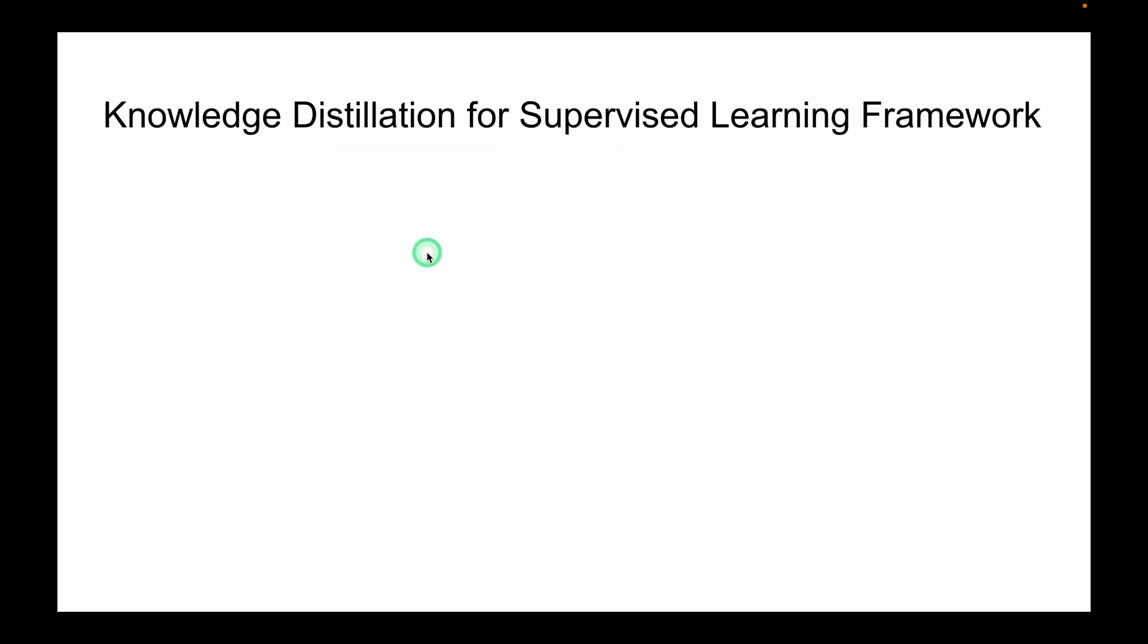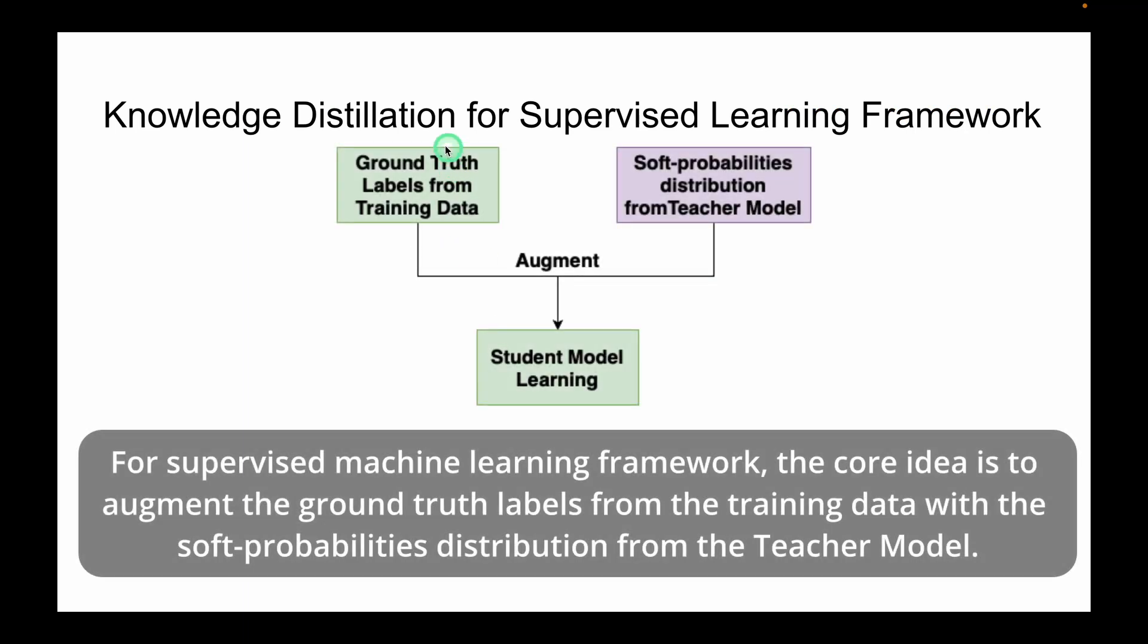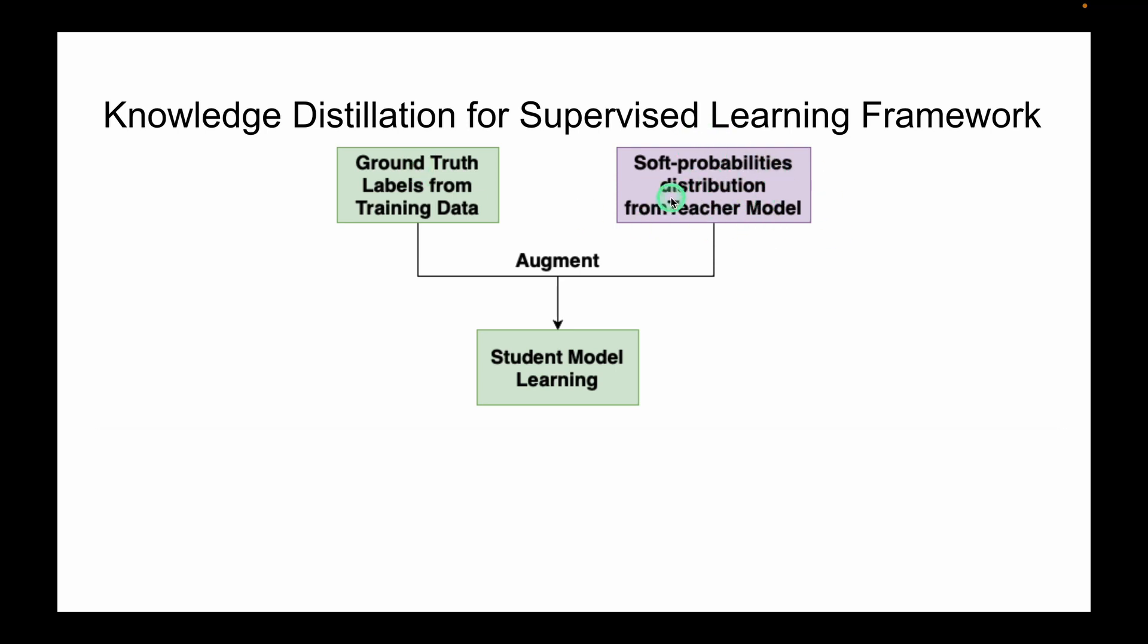So for supervised machine learning framework, the core idea is to augment the ground truth labels from the training data with the soft probabilities distribution from the teacher model. This distribution provides complementary information to student model while training.